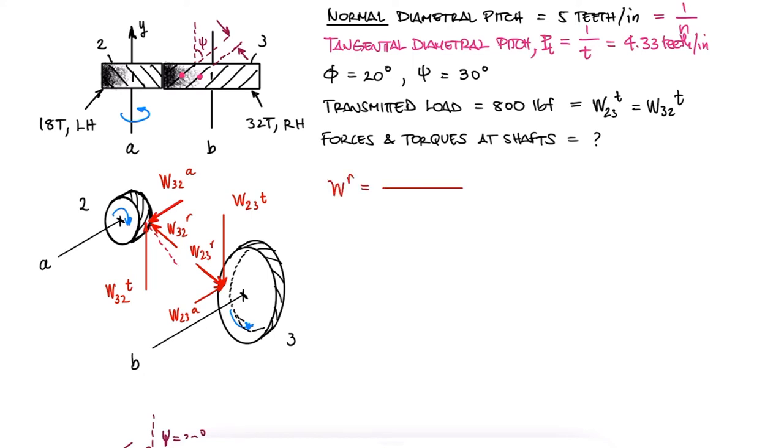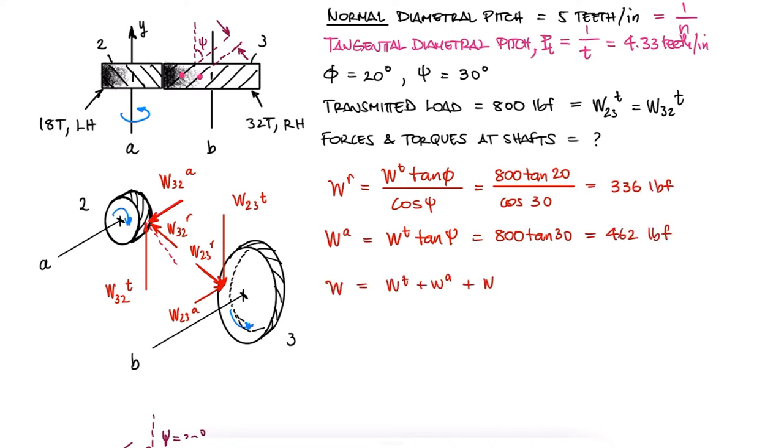From the expressions we derived during the main video, we can find the values for the radial and the axial components. With the three components, we can find the total force, and since the only forces are the interaction forces, this value is true for both shaft A and shaft B.